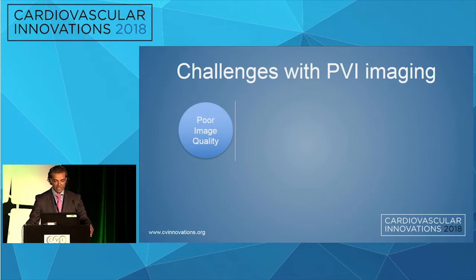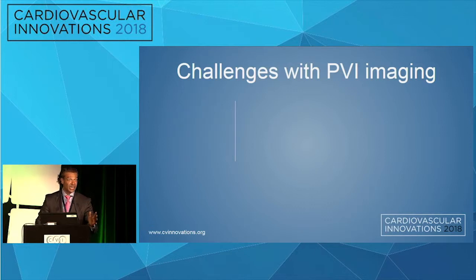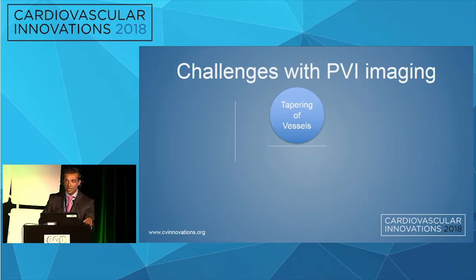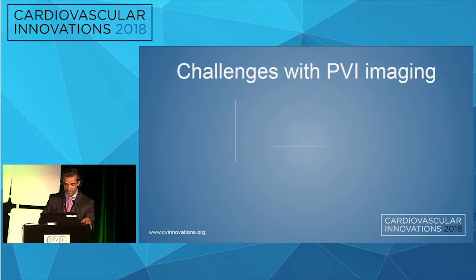When we talk about PVI imaging, there are several challenges, and this is what gets into the challenges of sizing. You have poor image quality, especially if you're not doing DSA. There's tapering of vessels, and we're going to talk about this a little bit. It happens when you're going from the SFA to the popliteal, as well as from the proximal infrapopliteal vessel to the distal infrapopliteal vessels.